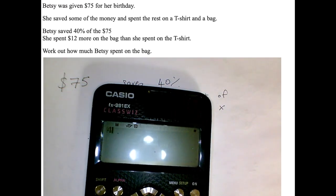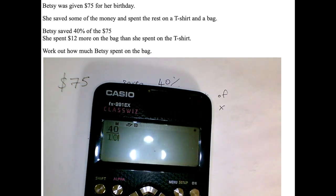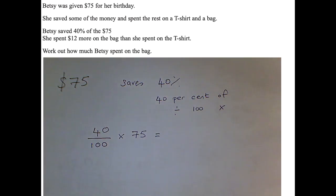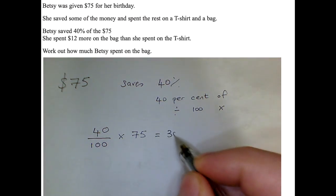So let's have a little look. So 40% of 75 equals 30, so she's saved $30, and she's going to spend the rest.